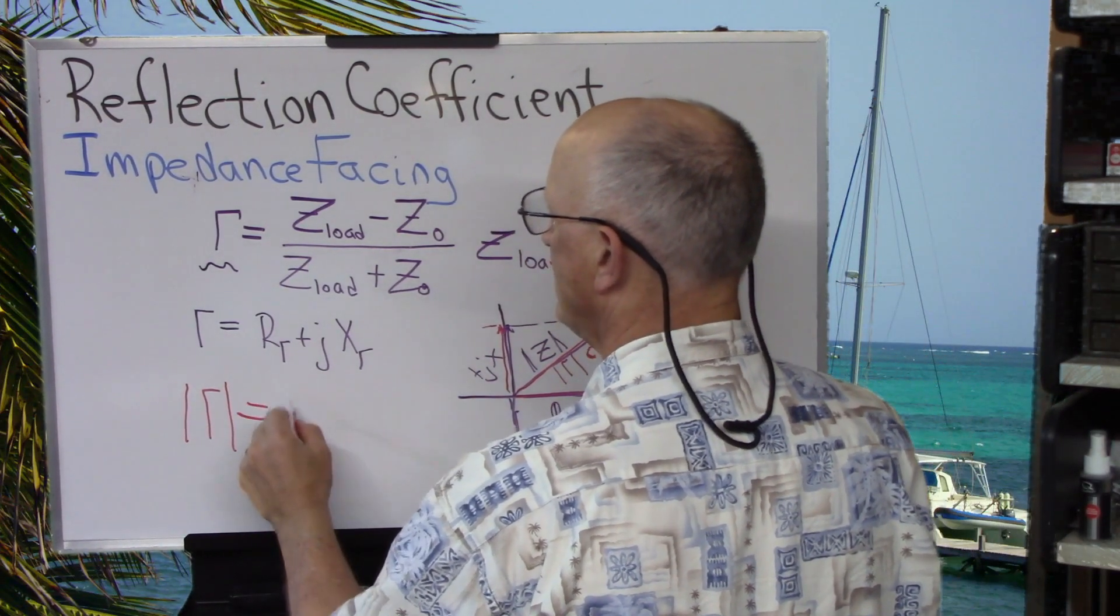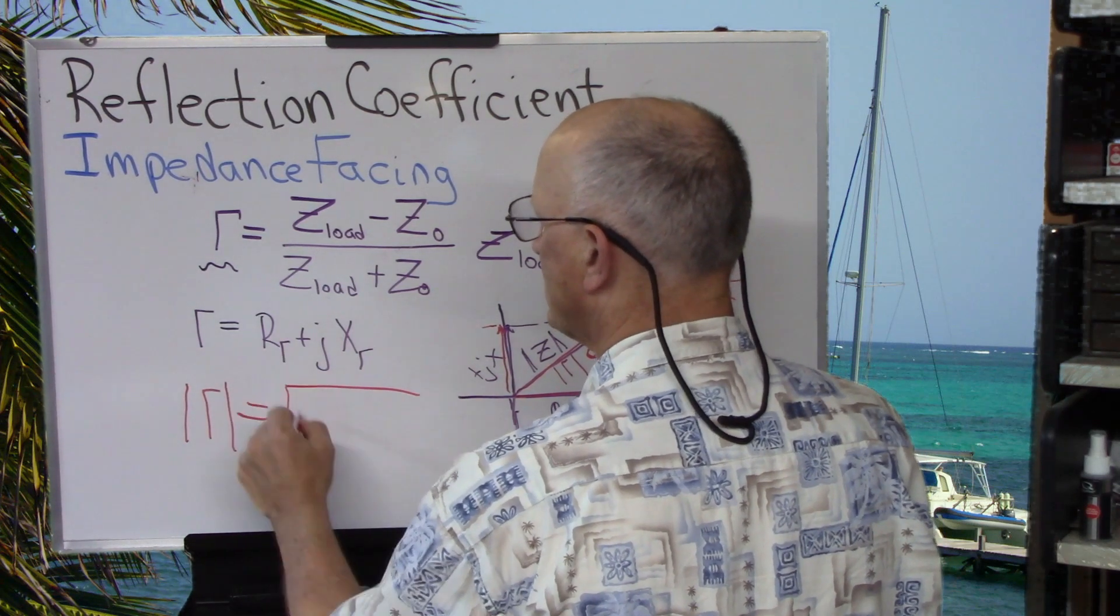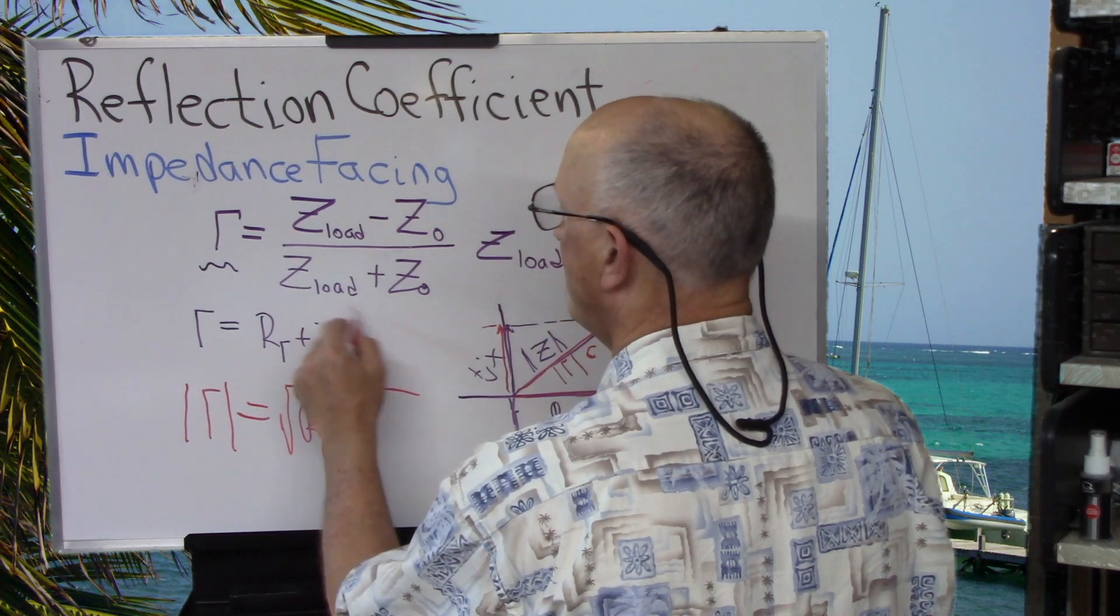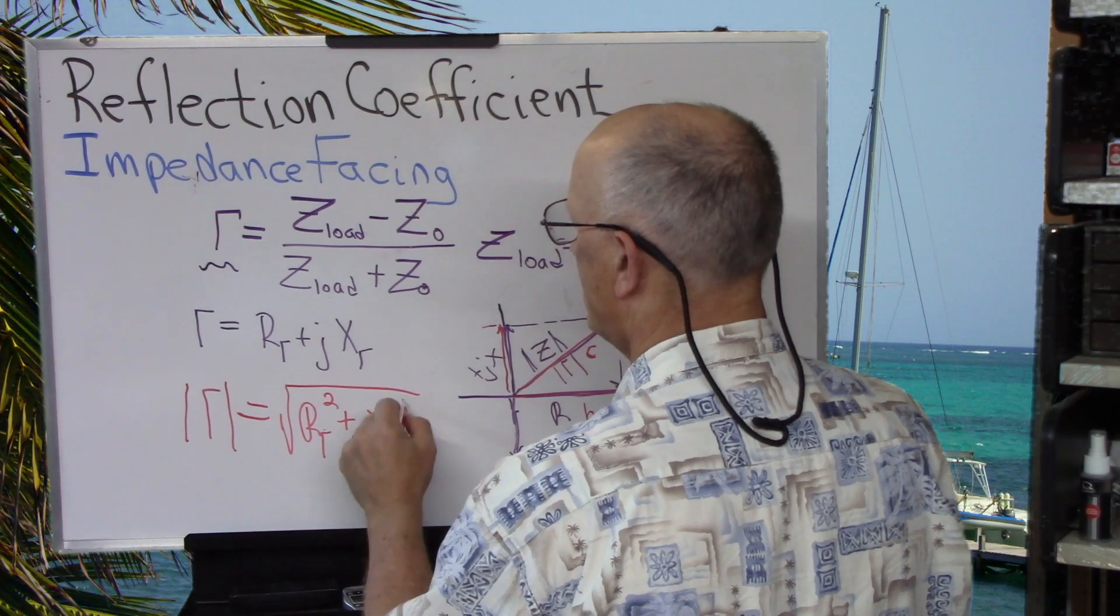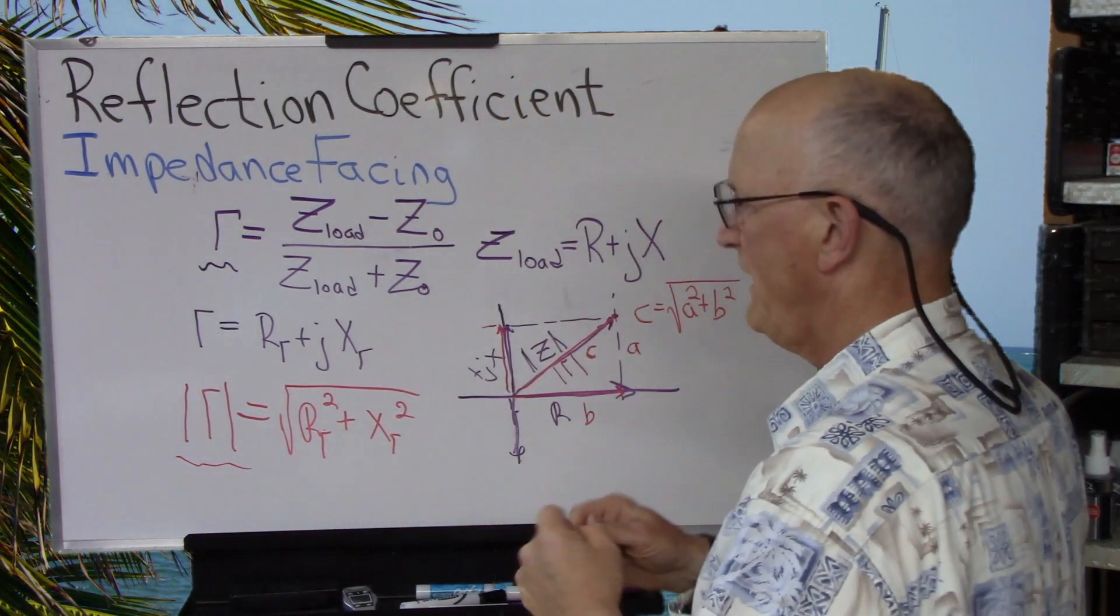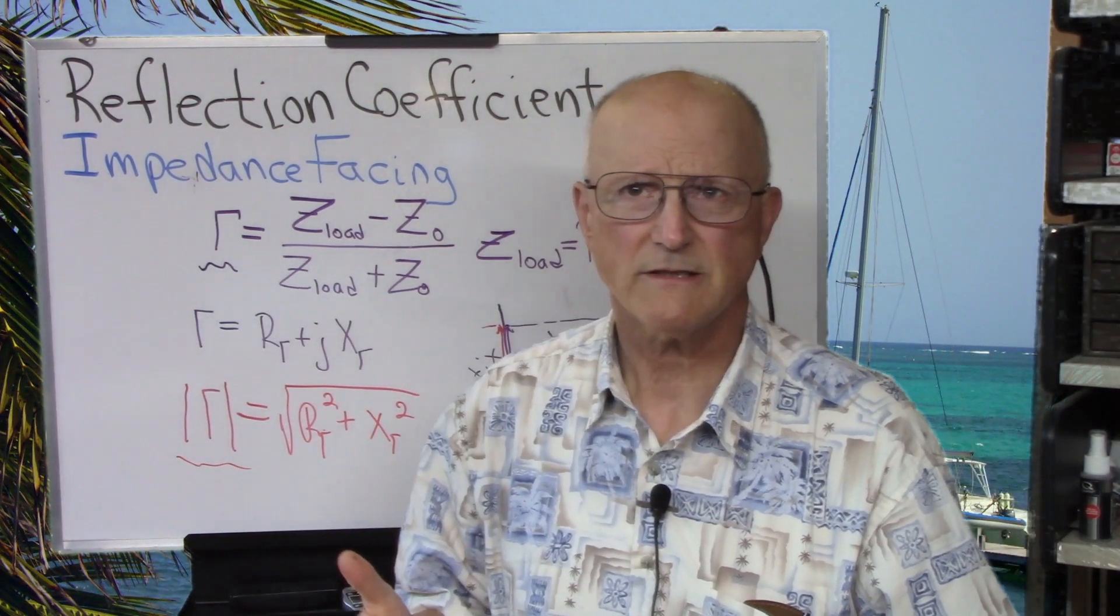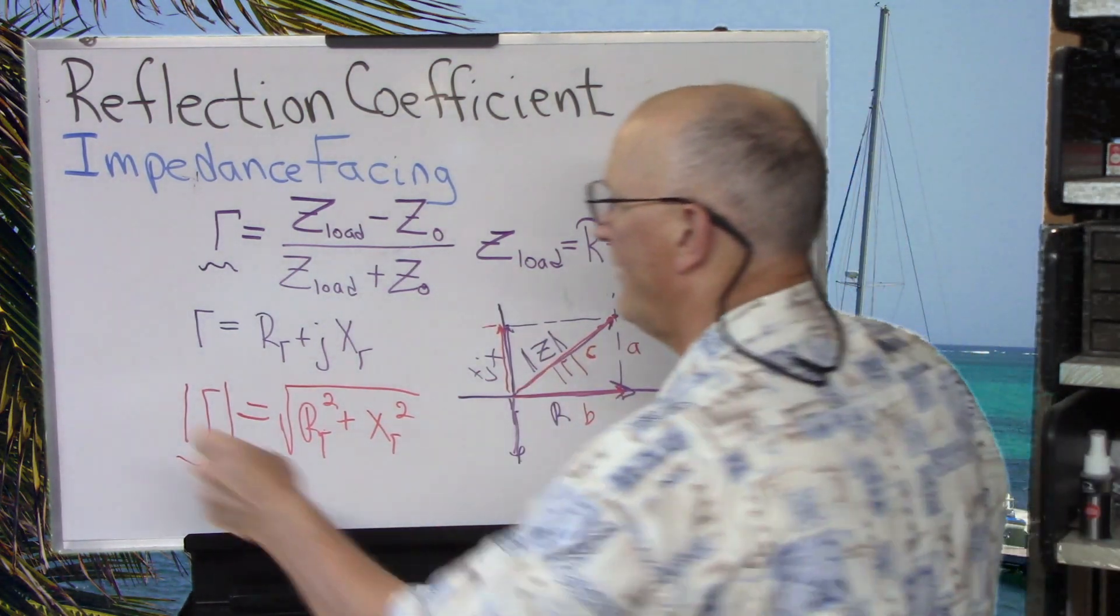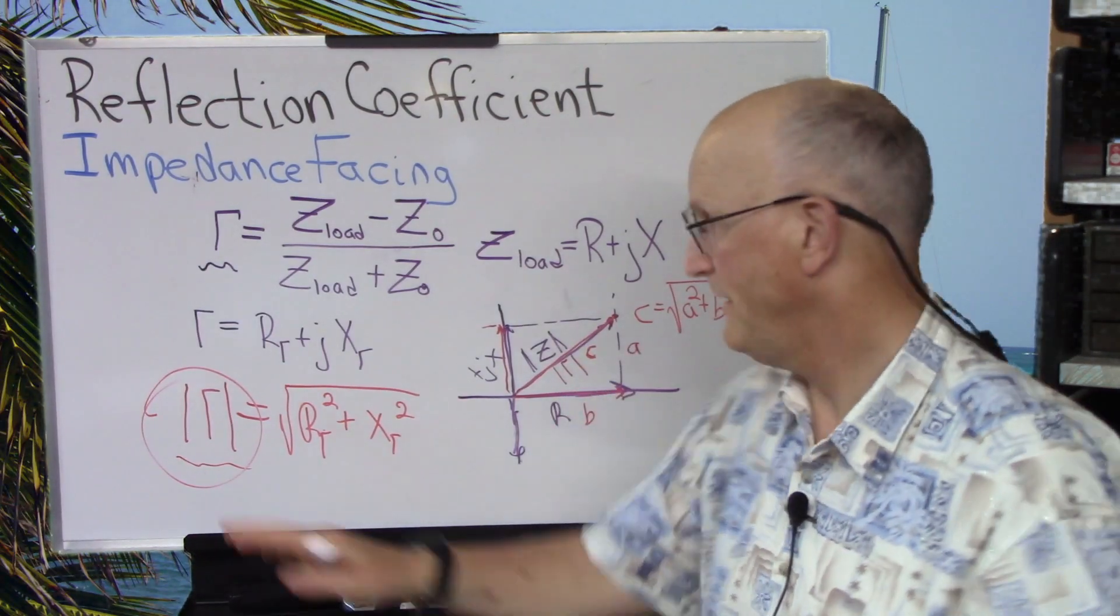The magnitude of gamma is equal to the square root of the real portion, R sub gamma squared plus the imaginary portion, X sub gamma squared. And you say, well, why is that important? Because when we want to calculate return loss or we want to calculate VSWR, this is the entity that you're going to need to do that.